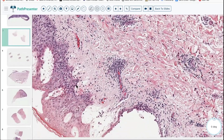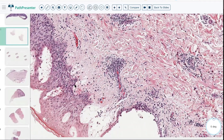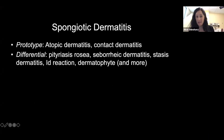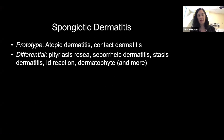If you get spongiotic and psoriasiform kind of down, you're in pretty good shape for DermPath. Throw in lichenoid, and you're at second or third year resident level. Prototype: atopic dermatitis and contact dermatitis. Atopic dermatitis is the dermatology terminology for eczema. Eczema is a terrible phrase — it refers to everything that's spongiotic, basically. Don't ever put that in a pathology report because it's not specific enough.